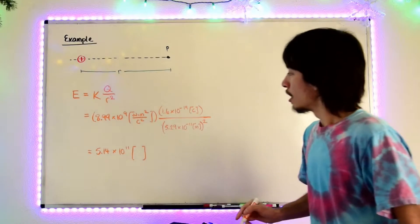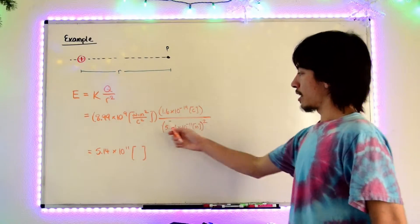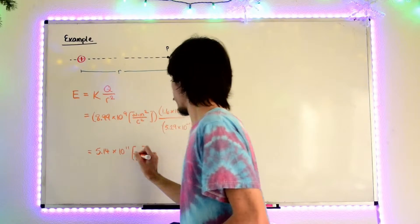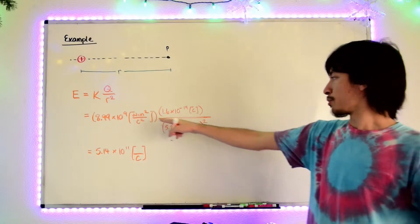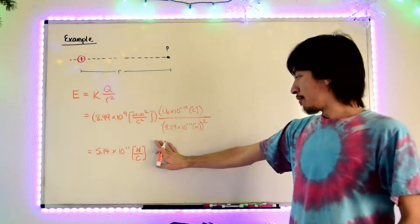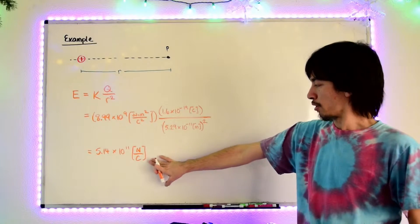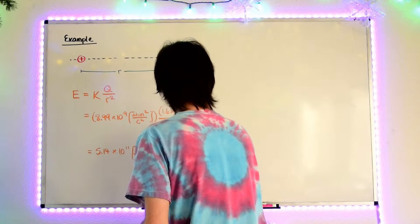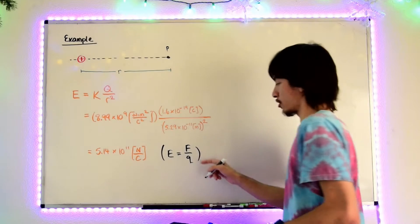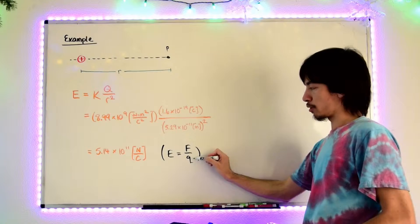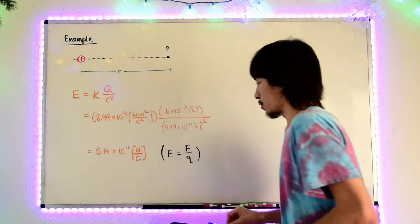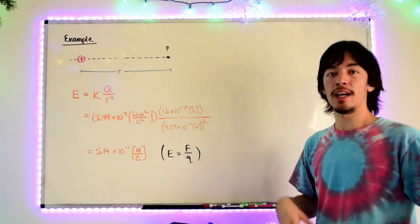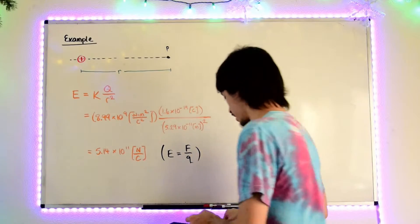Now the units — if we take a look at the units, the coulombs squared cancels out with the coulombs up here, so we still have one coulomb left in the bottom. The meter squared cancels out with the meter squared, which means we only have the newtons on top. The unit of an electric field is newtons per coulomb, which makes sense because the equation that defined an electric field was force per charge. So in other words, if I were to have one coulomb of charge, this much force would act on it. That's electric field.